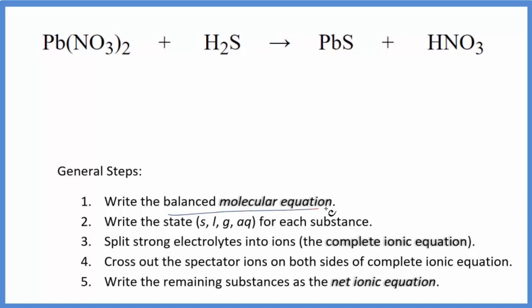Let's balance the molecular equation first. I see I have two of these nitrate ions here and only one over here. Let's put a 2 in front of the nitric acid. So now we have two nitrates, we have two hydrogens. That's good. We have two hydrogens here. Sulfur, sulfur, lead, lead. This is the balanced molecular equation.